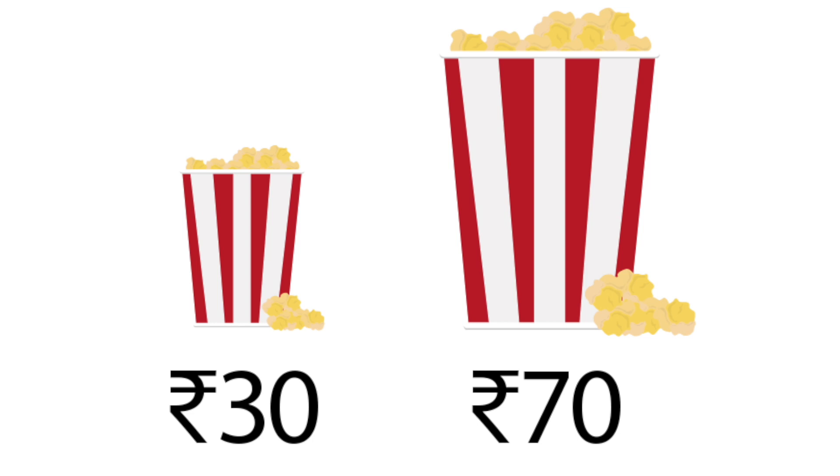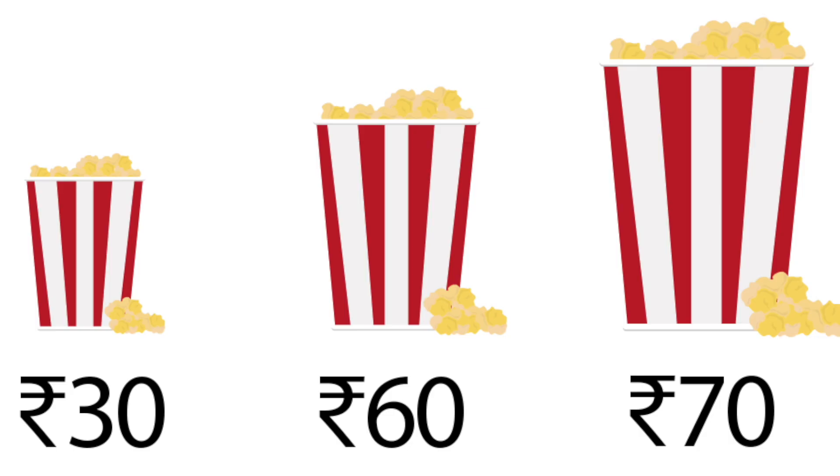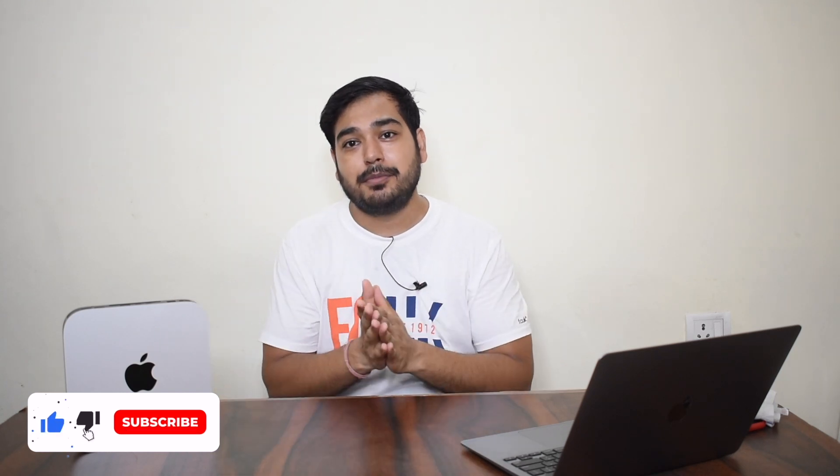The price of small is ₹30 and large is ₹70. Obviously, most people will purchase the small. But what happens with the Decoy Marketing Effect? They introduce a medium option at ₹60. Now the difference between small and medium looks like ₹30, but when you look at medium versus large, the difference is only ₹10. So you think, why buy medium? Let me just buy the large one.